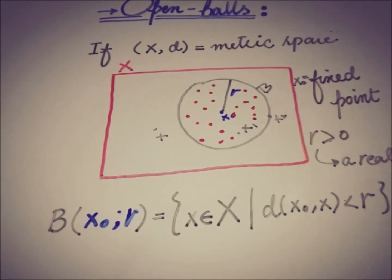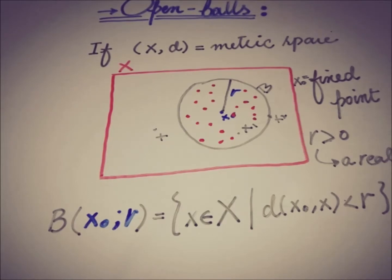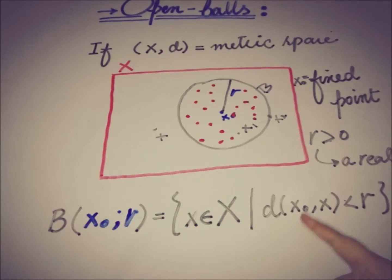So we can say that an open ball of radius R is the set of all points in X whose distance from the center of the ball is less than R. This is a compact definition of an open ball.